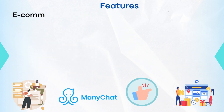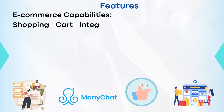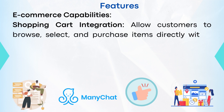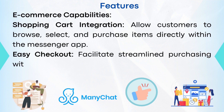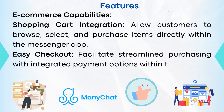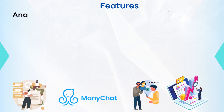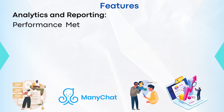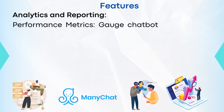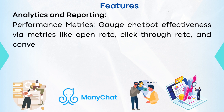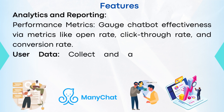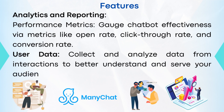Number four: e-commerce capabilities. Shopping cart integration allows customers to browse, select, and purchase items directly within the Messenger app. Checkout facilitates streamlined purchasing with integrated payment options within the chat. Number five: analytics reporting. Performance metrics gauge chatbot effectiveness via metrics like open rate, click-through rate, and conversion rate. User data allows you to collect and analyze data from interactions to better understand and serve your audience.